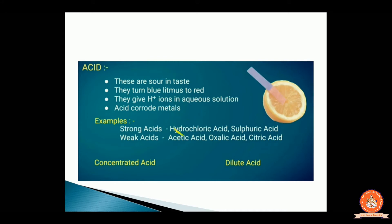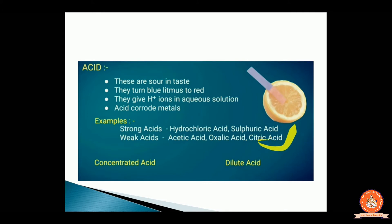We know that hydrochloric acid is produced in our body, which I already explained in chapter number 6, Life Processes. And citric acid — for example, I already gave the example in the exam: in lemon juice, citric acid is present. So it is a weak acid.